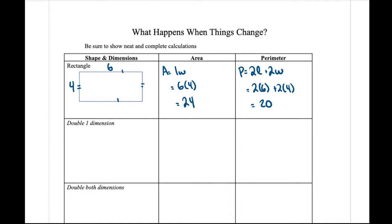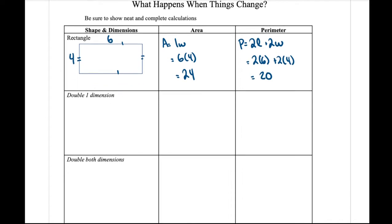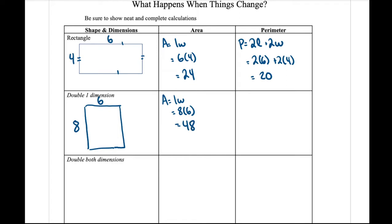So that's the area and perimeter for our rectangle as it is normally. Let's look at what happens if we double one dimension — let's say we make one dimension 8 and the other dimension stays at 6. Well, area is still length times width: 8 times 6 gives us a new area of 48. For perimeter: 2 times 8 plus 2 times 6 gives us 16 plus 12, and we get 28.